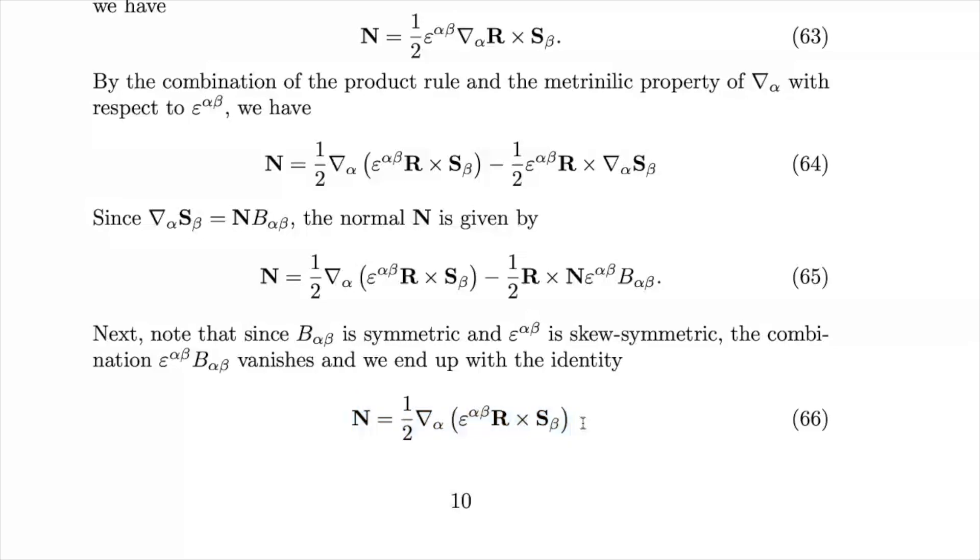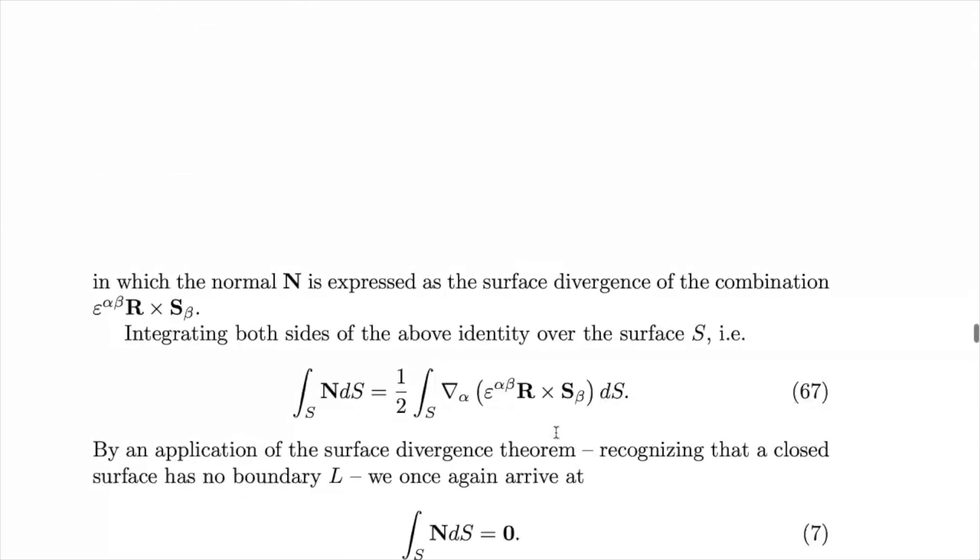And so we're left with a single term representing the unit normal. And this identity tells us that the unit normal is actually the surface divergence of something. And that something is this combination right here. And that makes it subject to the surface divergence theorem, which we're about to apply. So we'll integrate both sides over the surface.